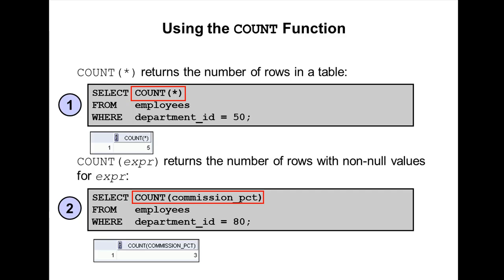Whereas COUNT expression returns the number of non-null values in the column identified by expression. If we use COUNT DISTINCT expression, it returns the number of unique non-null values in the column identified by expression. The basic difference between COUNT star and COUNT expression is COUNT star takes null values whereas COUNT expression ignores null values.